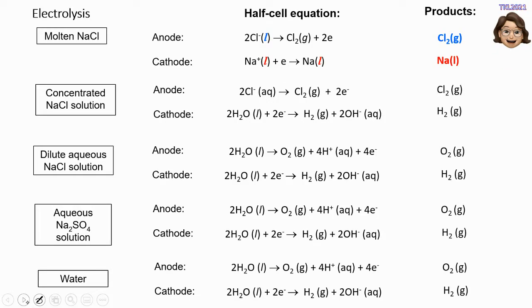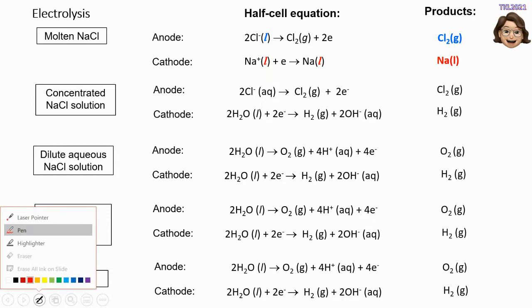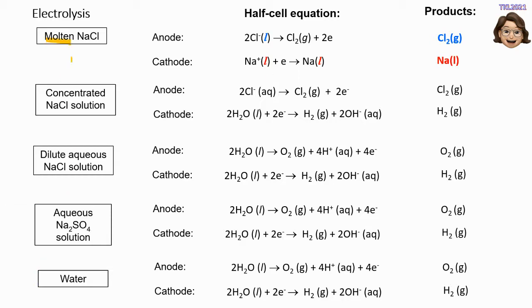For electrolytic cells, there are a few terms you must know: molten, concentrated, dilute aqueous. Now let's go to molten.